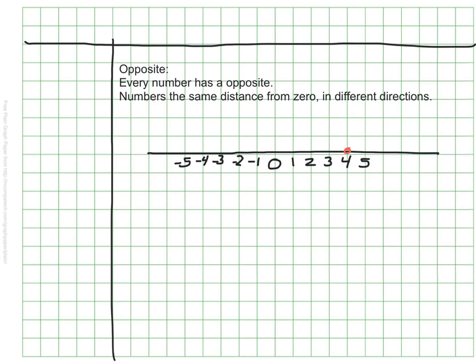Four is the opposite of negative four. They are both the same number of spaces away from zero. Four is one, two, three, four spaces from zero.